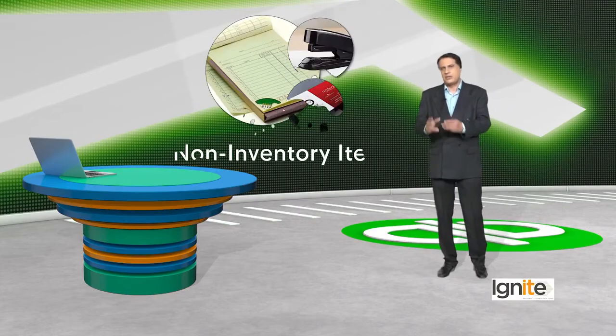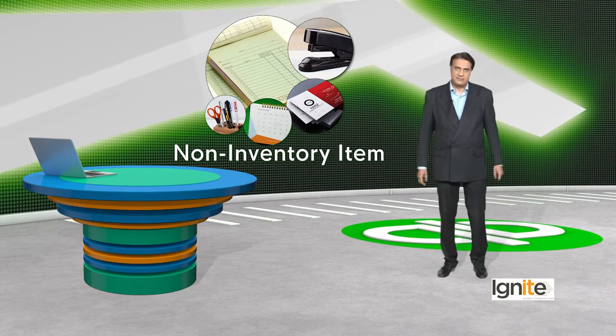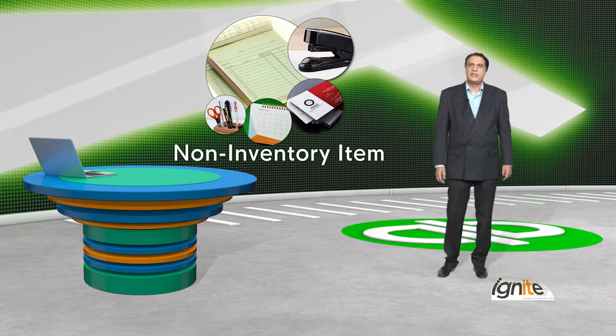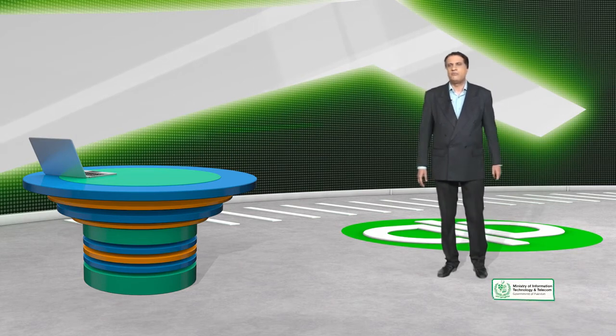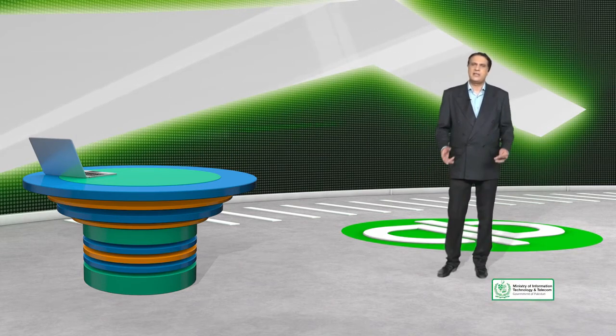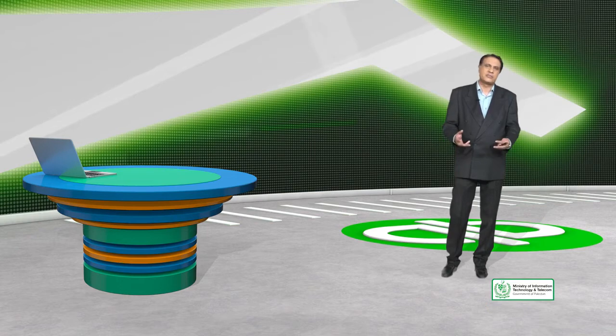There is another thing called a non-inventory item. What do we need to record for this? A non-inventory item is the item that can support our inventory items. This is the sale of non-inventory items — we can sell them in conjunction with our main item, and our sale price is based on the main item.